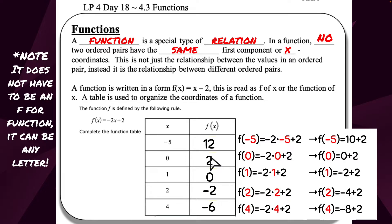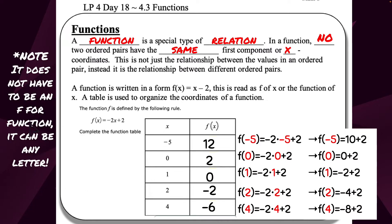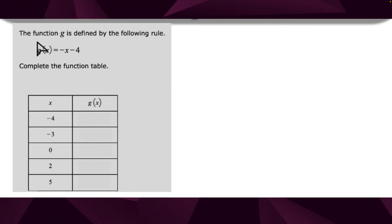We're going to try this one more time with another practice problem. The function g is defined by the following rule. This shows you that it doesn't have to be f for function. We would still say the function of x. G is just the name of this function by chance. It can be any letter. So g(x), or the function of x, equals negative x minus 4. I'm going to plug in whatever they're asking me for x. I need to pay attention to that negative in front. That's not part of the number I'm plugging in. Then I'll subtract 4.